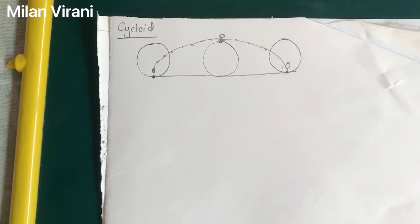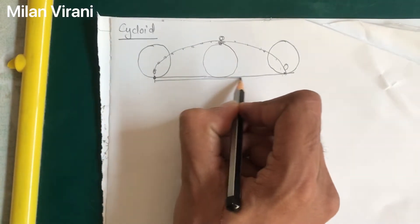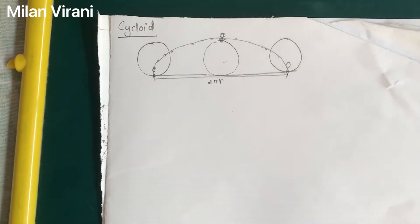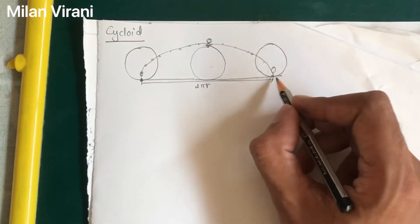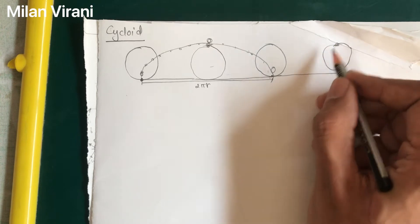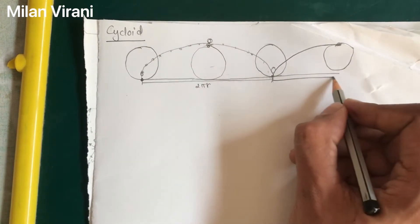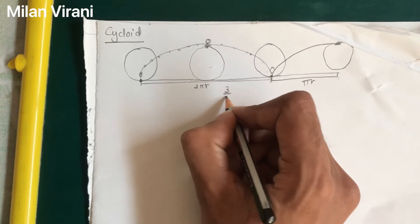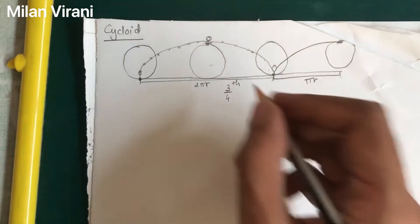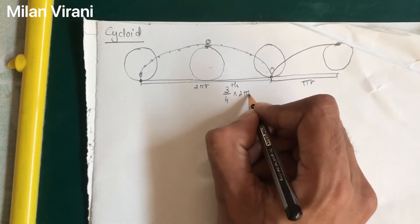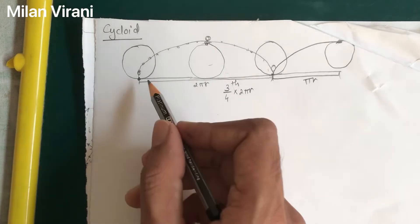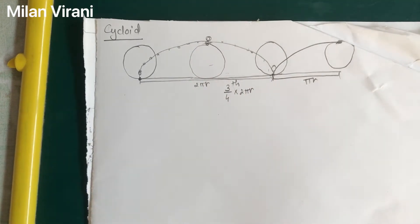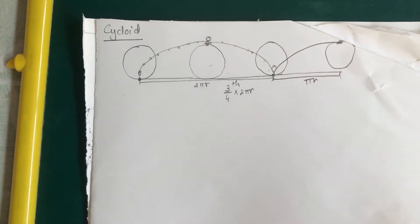To draw a cycloid, the total length for one full rotation is 2πr. For one and a half rotations it is 2πr + πr. For three-fourths rotation it is three-fourths of 2πr. This equation allows us to calculate the total length covered by the circle for any given rotation.